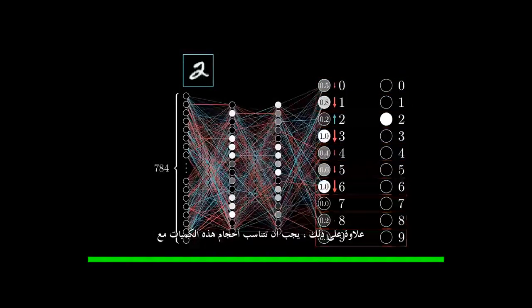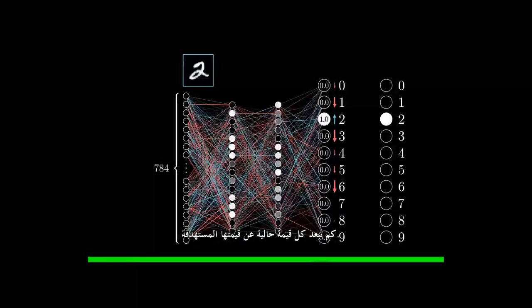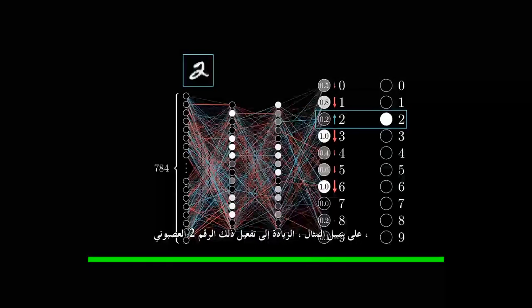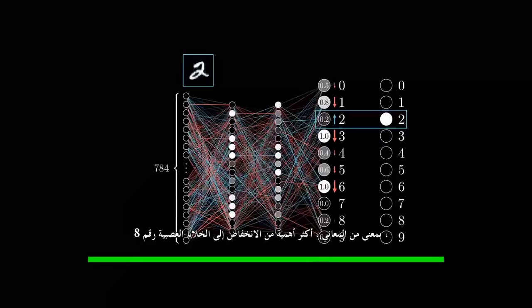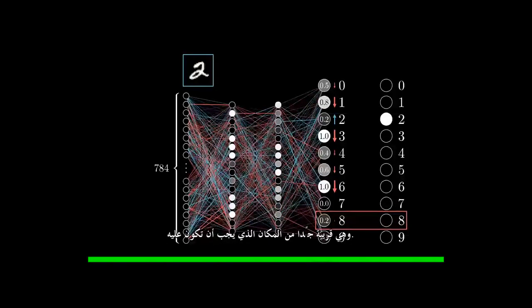Moreover, the sizes of these nudges should be proportional to how far away each current value is from its target value. For example, the increase to that number two neuron's activation is in a sense more important than the decrease to the number eight neuron, which is already pretty close to where it should be.